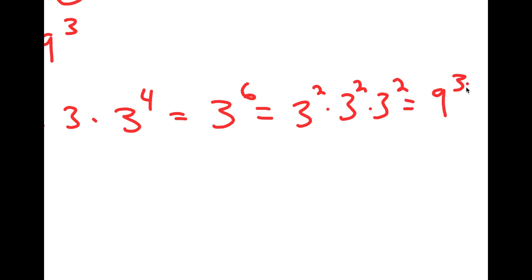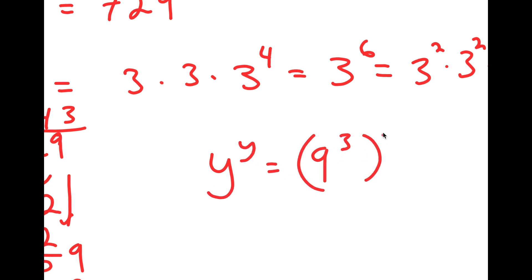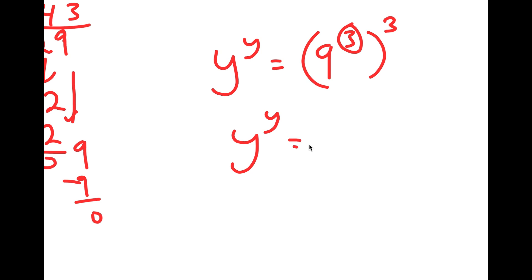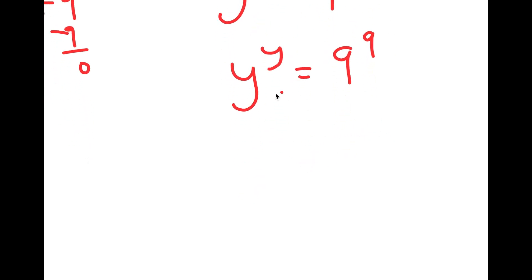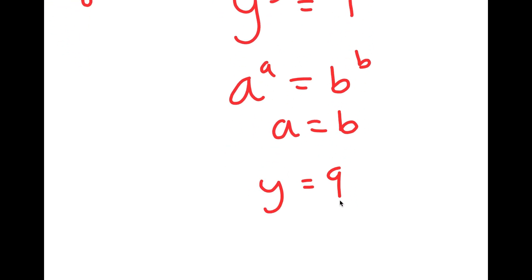So I'm going to replace 729 with 9 to the power of 3. I get y to the power of y is equal to 9 to the power of 3 to the power of 3. And the reason I did this is because 9 to the power of 3 to the power of 3 is the same thing as 9 to the power of 3 times 3, and 3 times 3 is 9. So I get y to the power of y is equal to 9 to the power of 9. Now I can use the property: if a to the power of a is equal to b to the power of b, this means a equals b. So in this case, y is equal to 9.